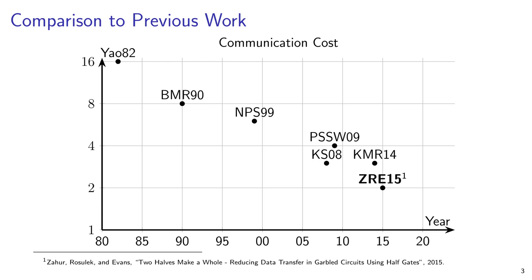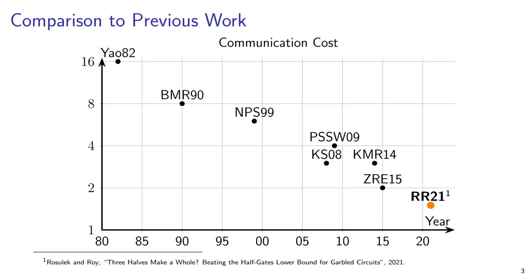This allowed AND gates to be garbled with only two ciphertexts worth of communication. Half-gates was the state of the art for six years, and was even proven optimal in a restricted model. Initially, we also believed it was optimal and tried to prove this more generally. However, while investigating what made our attempted proof difficult, we discovered something new. With sliced and diced garbling, an AND gate can now be garbled with just three halves ciphertexts, while maintaining compatibility with free XOR.